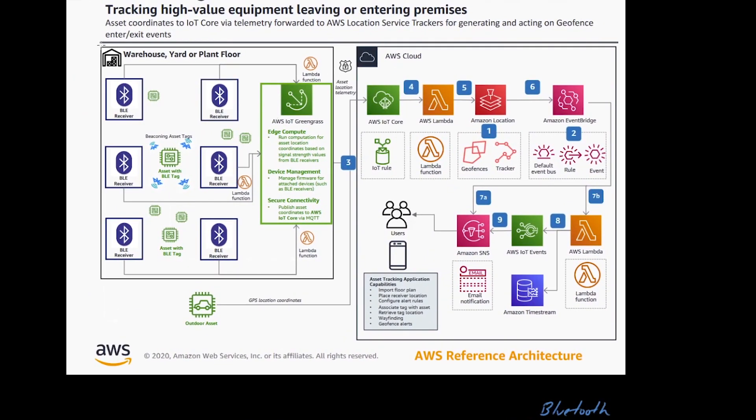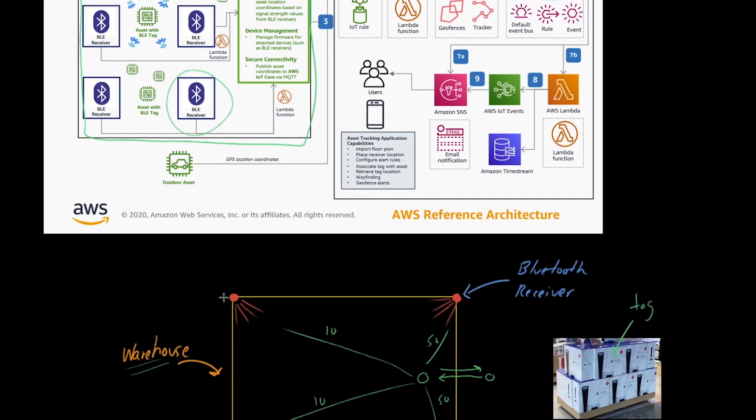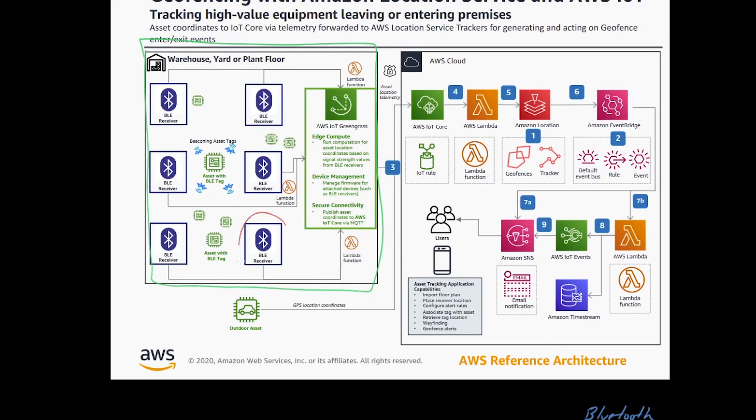Over on the left-hand side here, I'm just going to circle this section really quick. This is all for warehouse configuration. We have our Bluetooth receivers—these were the things that we had in the four corners of our warehouse in this example.